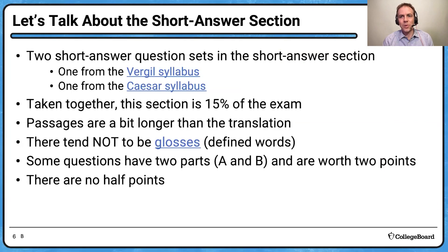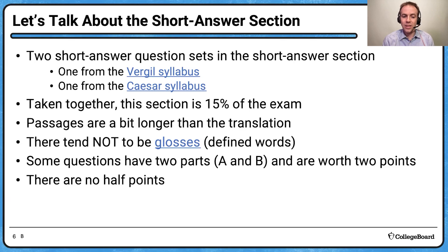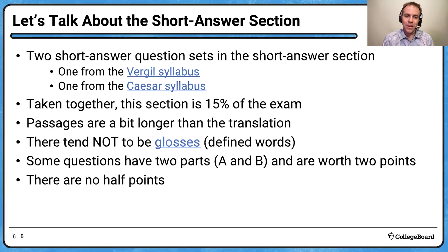We're also going to talk about the short answer section. On the free response section there are five questions, and two of those are short answer questions. One is from the Virgil syllabus and the other from the Caesar syllabus passages — both from texts you will have seen before, which is helpful. Taken together, the short answer section is 15% of the exam, weighted the same as the translation questions. The passages are a bit longer than the translations — maybe seven to ten lines of poetry or around 60–70 words for Caesar.